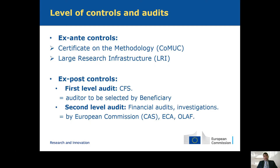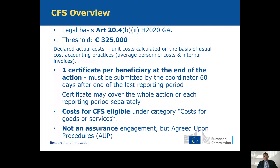For the first level audits — the CFS — the auditor is selected by the beneficiary. The legal basis is Article 20.4 BEE and there is a threshold of 325,000 euros. In this we only include the declared actual cost and the unit cost calculated on the basis of the usual cost accounting practice, which includes average personal cost and the internal invoice. The threshold doesn't include indirect costs and the unit costs calculated like flat rates, for example for Marie Skłodowska-Curie actions. A certificate is required if this threshold is reached per beneficiary at the end of the action and must be submitted by the coordinator within 60 days after the end of the last reporting period. The certificate may cover the whole action or each reporting period separately.